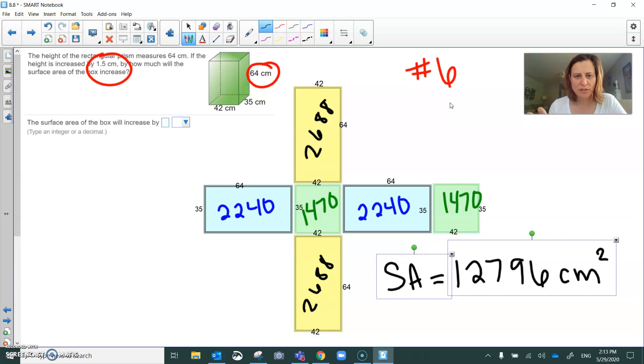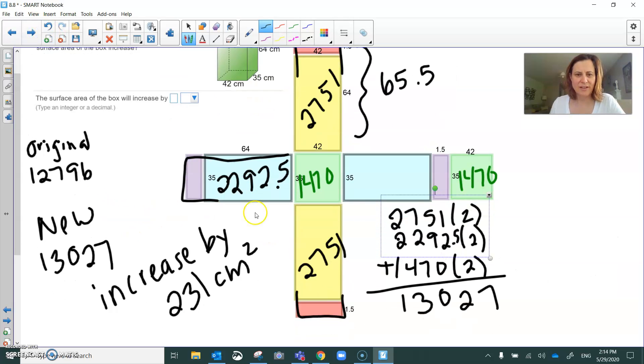Look at the blue. The blue parts were 64 by 35. 2240, two of them. The yellow parts were 42 by 64. 2688 and there's two of them. 2688 plus 2688 plus 2240 plus 2240 plus 1470 plus 1470 is 12,796. All right, 12,796.